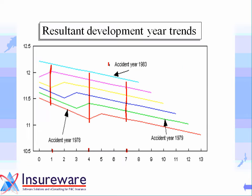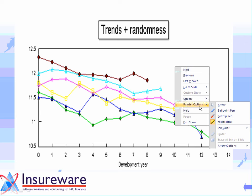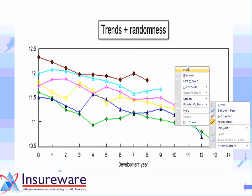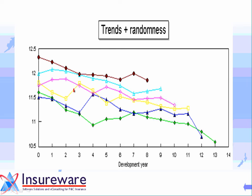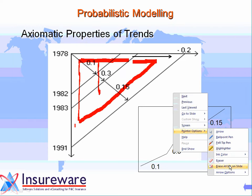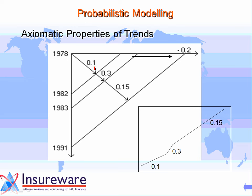We add random numbers from a normal distribution with mean 0 and variance 0.01 (standard deviation 0.1) to those values. That's what each of the first six accident years looks like. When we model the numbers that randomly deviate from the true trends, our expectations are: an estimate of around minus 20 for the development year trend, around 10 for the early calendar year trend, around 30 for the middle period, and around 15 thereafter. For our projection, we'll assume the future trend is around 15%.